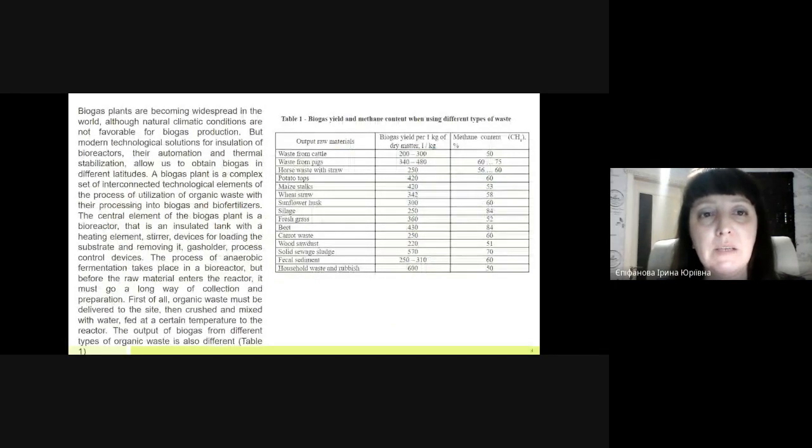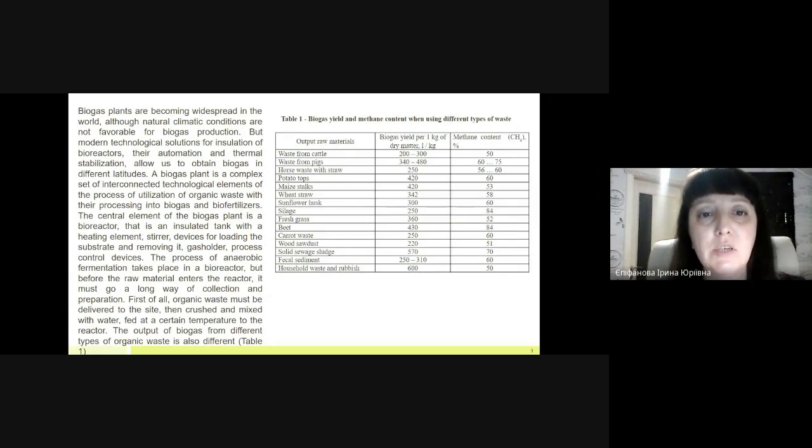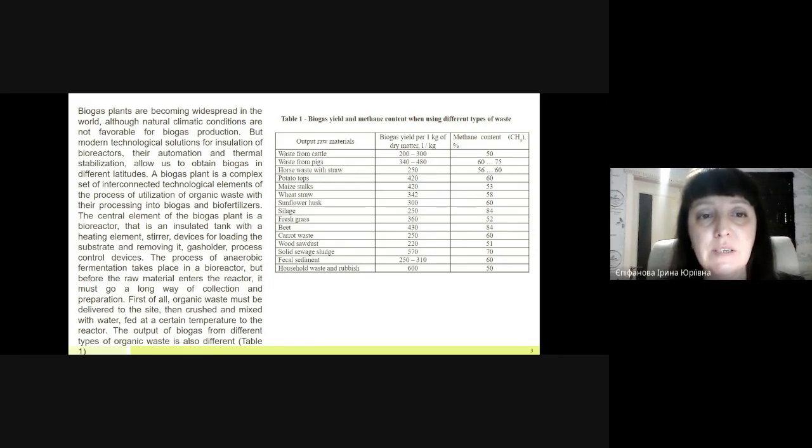Biogas plants are becoming widespread in the world, although natural climatic conditions are not always favorable for biogas production. But modern technological solutions for insulation of bioreactors, the automation and thermal stabilization allow us to obtain biogas in different latitudes. A biogas plant is a complex set of interconnected technological elements of the process of fermentation of organic waste with the processing into biogas and biofertilizer.